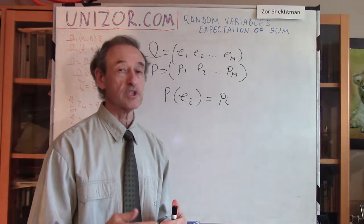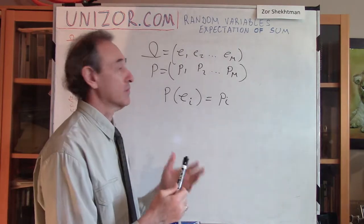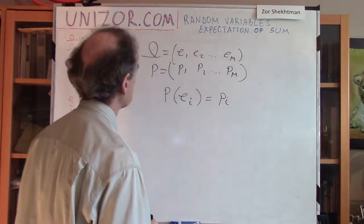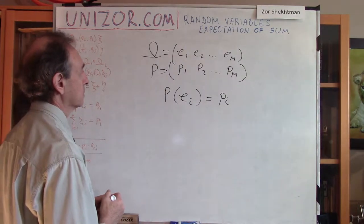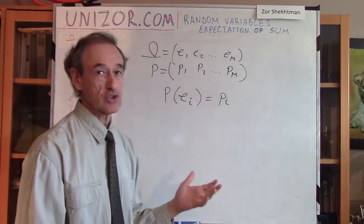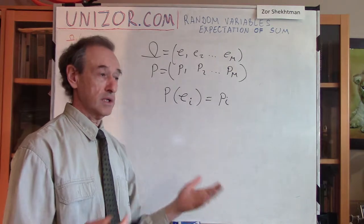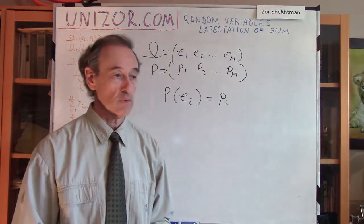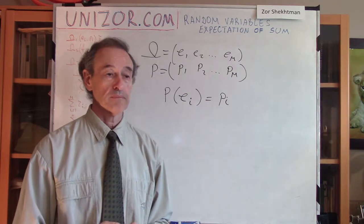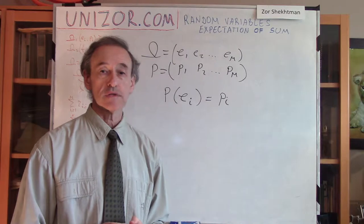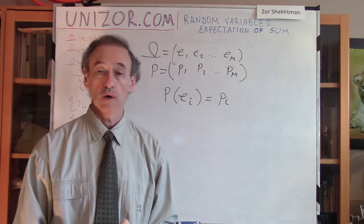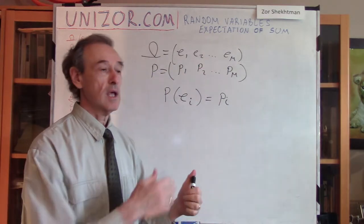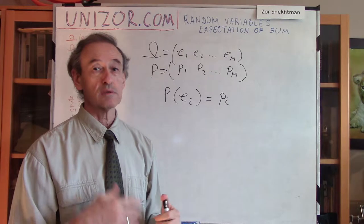The more times you conduct the experiment, the closer the frequency of occurrence of a certain event will be to this particular value. That's a statistical approach to probabilities. Now, let's assume we have a random variable, which is basically a function defined on each elementary event — for instance, a winning amount if you are playing poker, where these are all different results of the poker game, or it can be a temperature of a person randomly chosen from a crowd. So there is a certain random experiment which results in some elementary event, and with this elementary event is associated a certain numerical function.